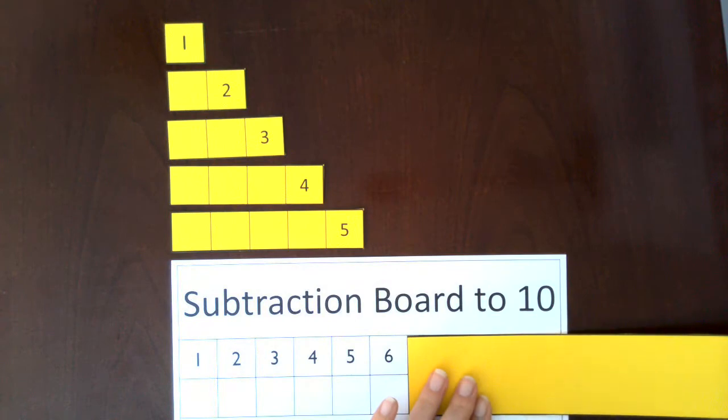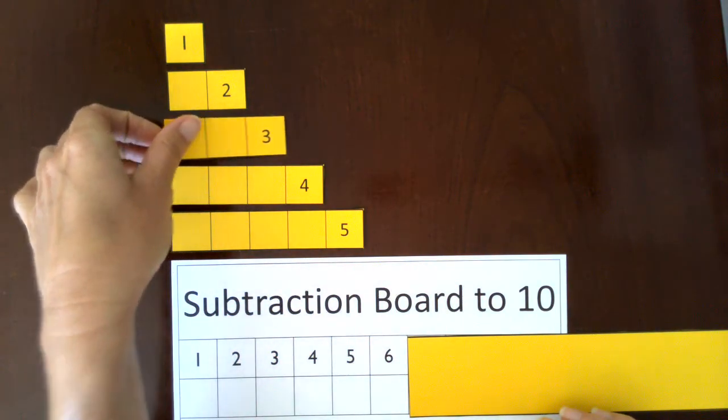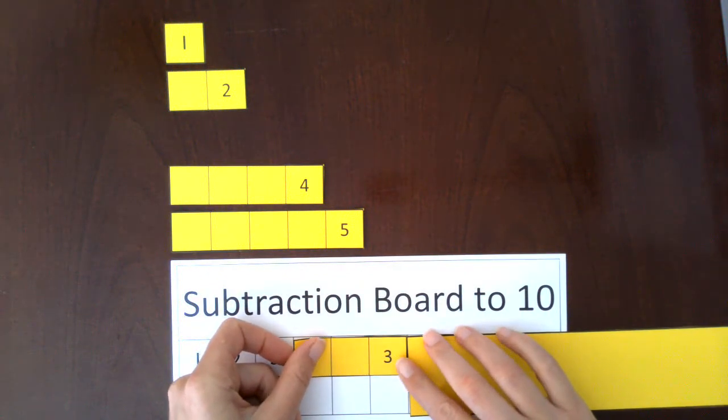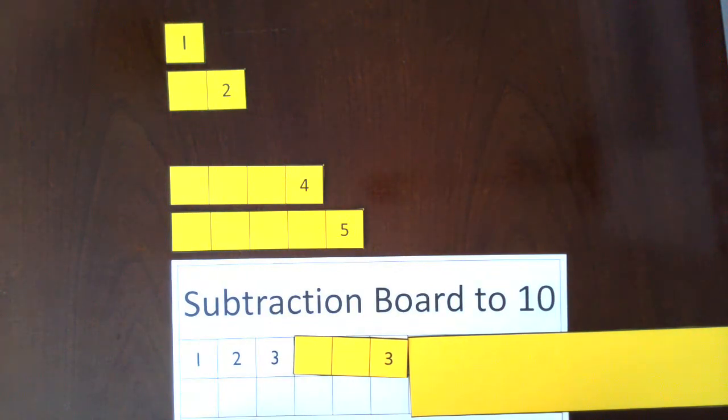Cover everything after 6, and we're going to take away 3. We're left with 3.